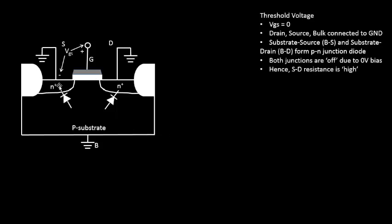Since both junctions are off, there is very high source-to-drain resistance, so there is absolutely zero current flow. The job of the threshold voltage will be to make this resistance small enough so that we see a current flow. We have to reduce the resistance of the channel — the area between source and drain. This transistor is called NMOS, or N-channel, and we'll be trying to create an N-channel here.